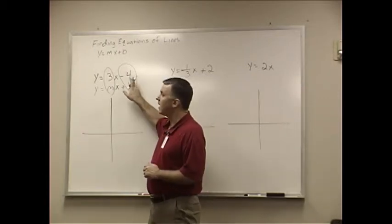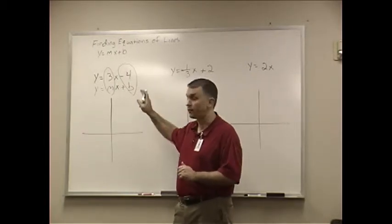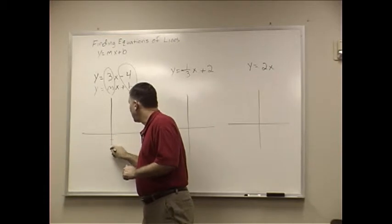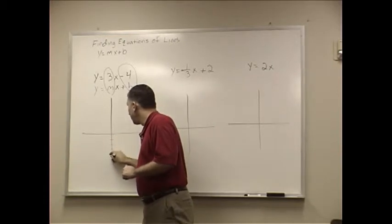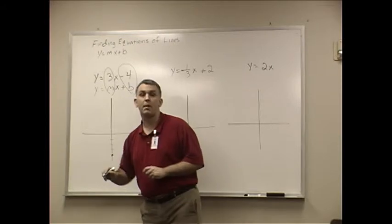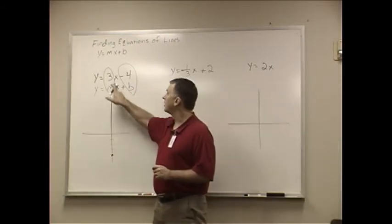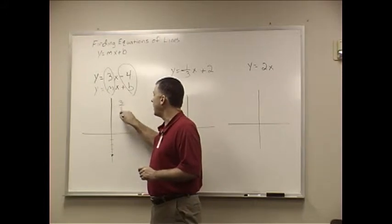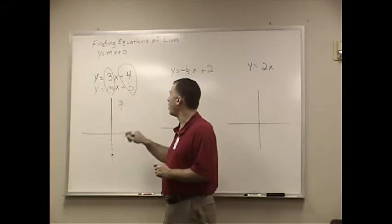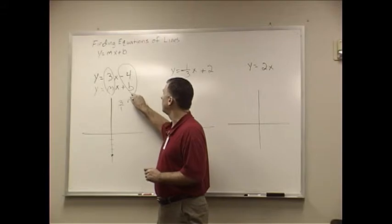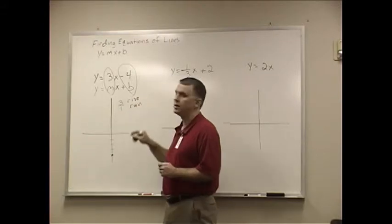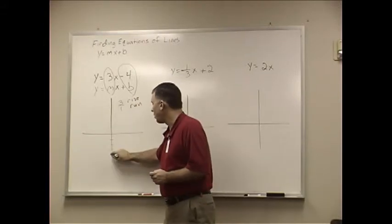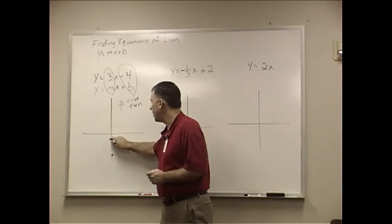Now, what does that mean? We always deal with the b value first. So I'm going to graph negative 4, because that's my y-intercept, and it's got a slope of 3. Well, if it has a slope of 3, that means 3 over 1. It means the rise is 3, and the run is 1. It means I go up 3, 1, 2, 3, and I go over 1.